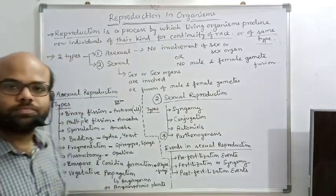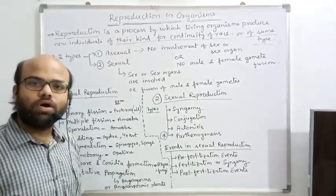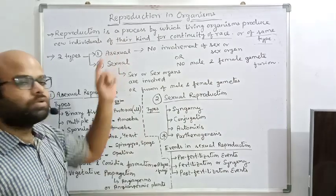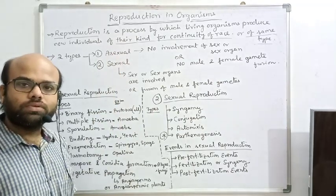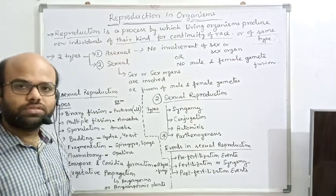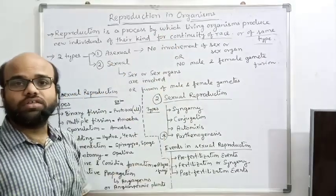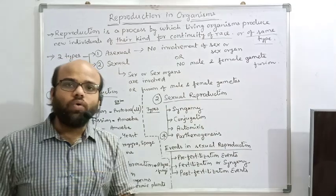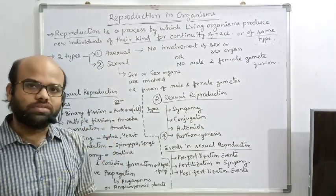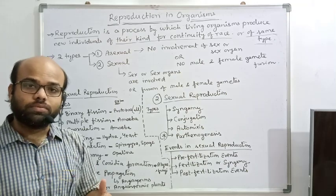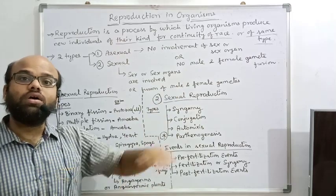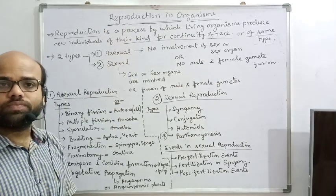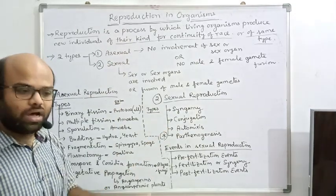Dear students, this is the first chapter of biology for CBSE and ICSE students, and the first chapter of botany for second year CHSE students. The chapter name is 'Reproduction in Organisms.' In this chapter, we will understand how a living organism can produce another living organism of the same type to maintain its generation for long ages. It is a very important physiological process to maintain the life process on this earth.